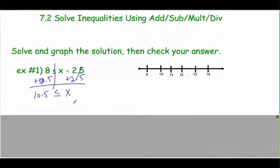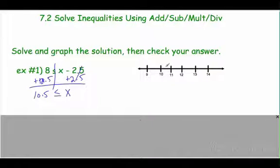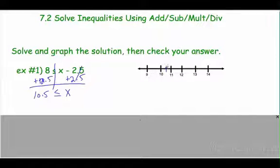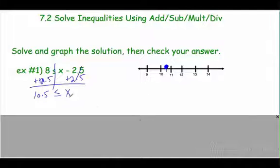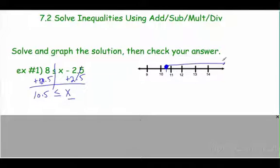Let's make our graph. My boundary is going to be 10 and a half, right in between. It could be equal to, so it's going to be a filled-in dot. And I want all the numbers that are greater than 10 and a half, so the arrow goes this way.